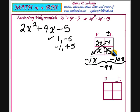And, the 2x times the 5 becomes a positive 10x. So, now when we combine -1x plus 10x, we will have a positive 9x. That is our middle term. So, we now have the correct work.